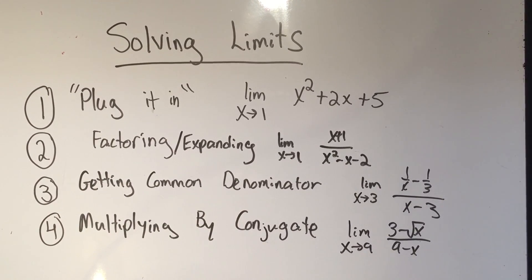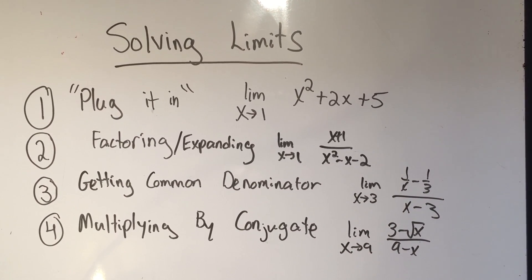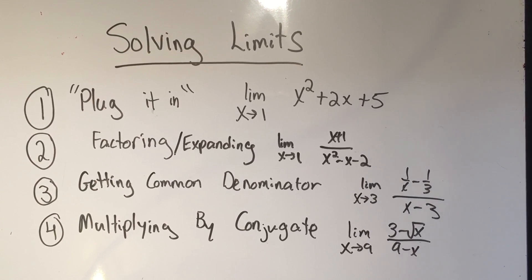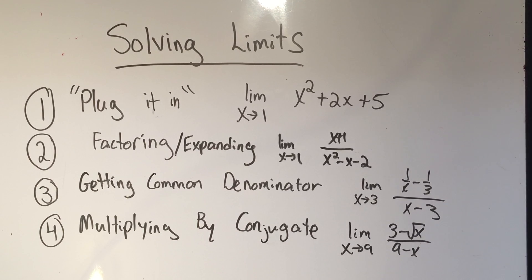Number three is getting a common denominator. This is characterized when you see two fractions, so anytime I see two fractions my instinct is to get a common denominator and combine those two things, and then some things should cancel after doing a little bit of algebra.